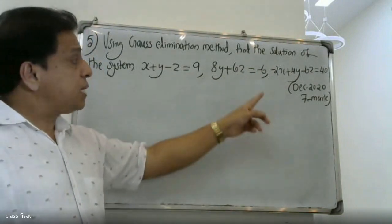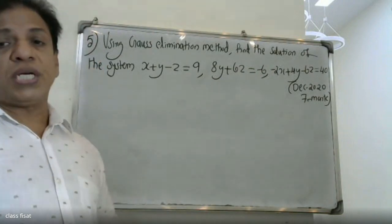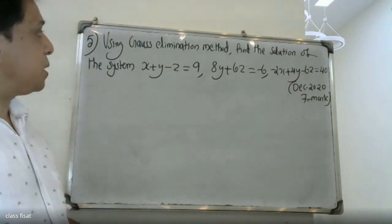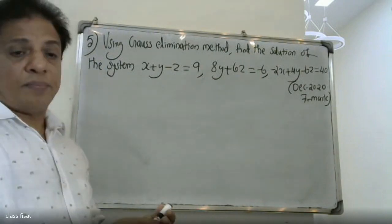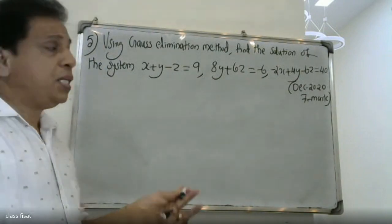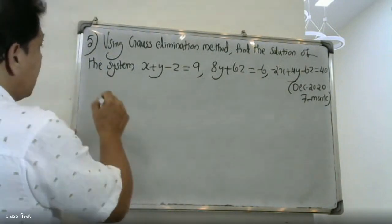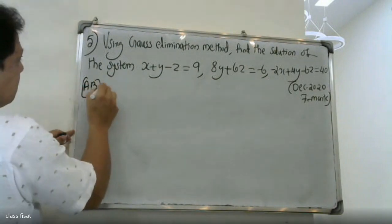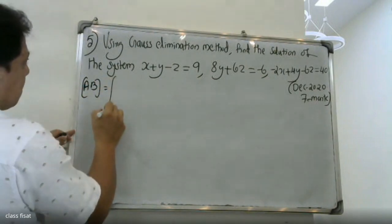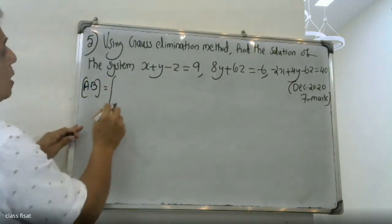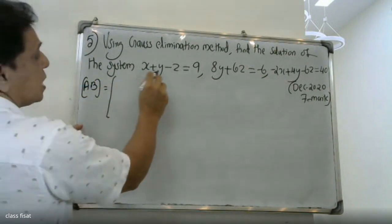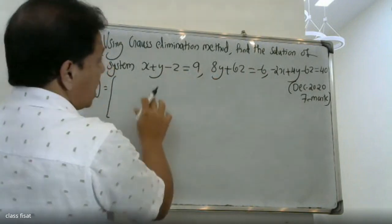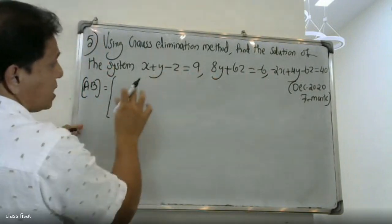I am solving it. We have three variables: x, y, z.